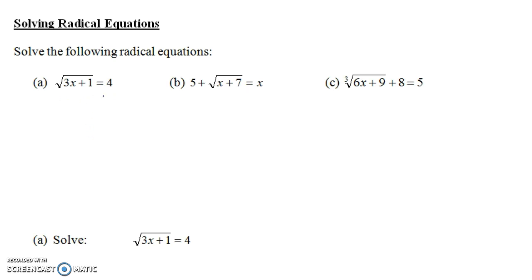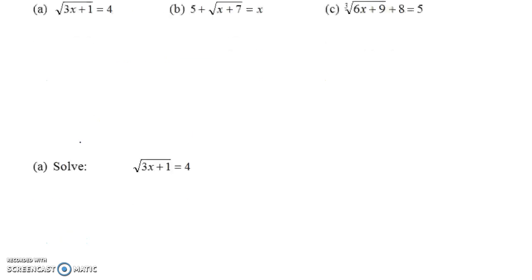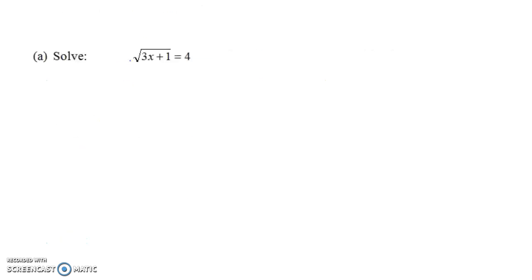Notice in part A, the radical is already isolated all by itself on the left-hand side of the equation. In parts B and C, that's not the case. We have the radical, but we have something else along with the radical. So in parts B and C, we're going to want to isolate it. Let's begin with part A. We have the square root of 3X plus 1 equals 4, and the radical is already all by itself on one side of the equation.